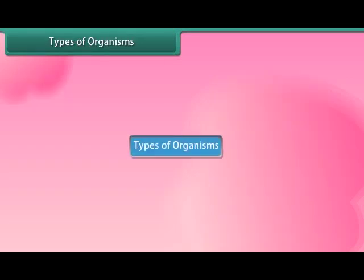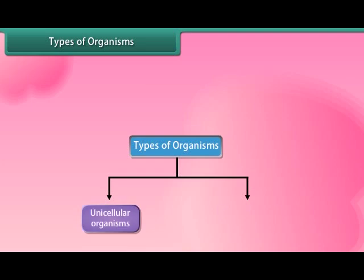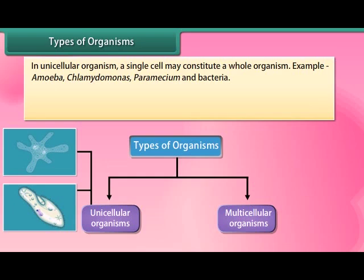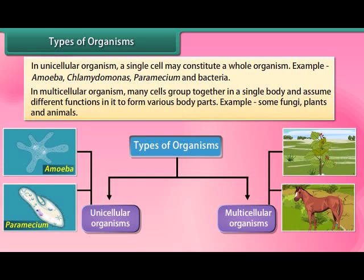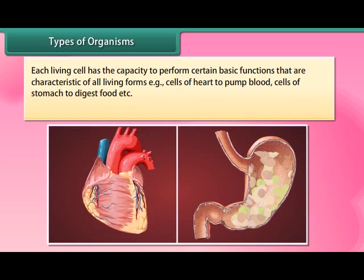There are two types of organisms: unicellular and multicellular. In unicellular organisms, a single cell constitutes the whole organism — examples include amoeba, chlamydomonas, paramecium, and bacteria. In multicellular organisms, many cells group together in a single body and assume different functions to form various body parts — examples include some fungi, plants, and animals.